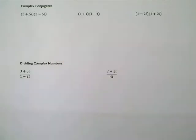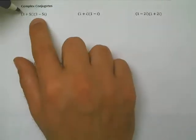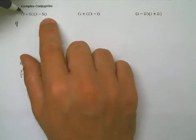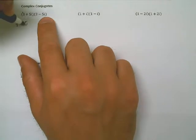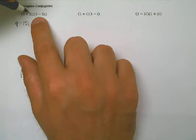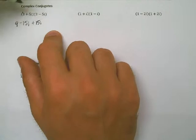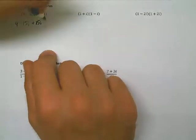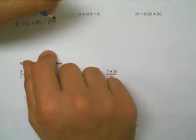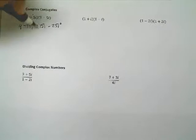The reason I do that is because you're going to notice something interesting whenever you FOIL them out. When you multiply conjugates by each other, something interesting happens. Let's FOIL. 3 times 3 is 9. Outside, minus 15i. Inside, plus 15i. Last terms, minus 25i squared. Notice that the two middle terms go away, right? Plus and minus 15i.